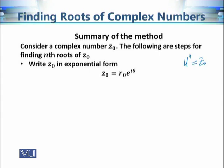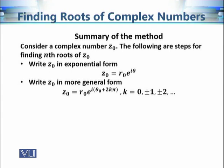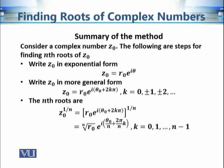In the first step we write down this complex number in exponential form. In the next step we write down the most general form of this complex number in exponential form — we add 2k-pi to the argument of this complex number. As discussed previously, if we increase the argument by an integer multiple of 2-pi it gives the same complex number. In the third step we raise the power of this exponential form by 1/n, which gives the result. These are the three steps for calculating nth roots.